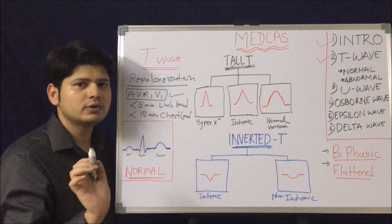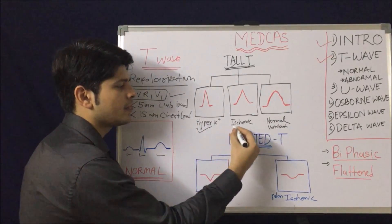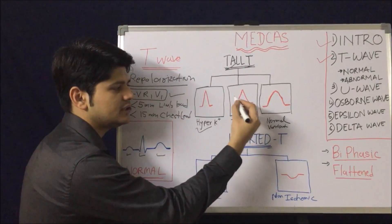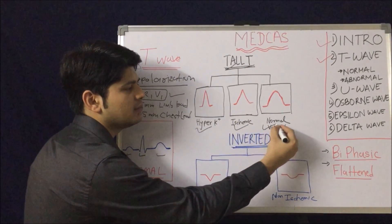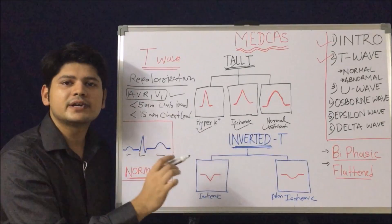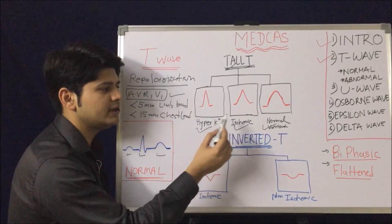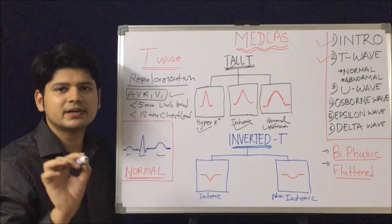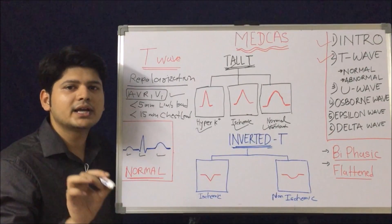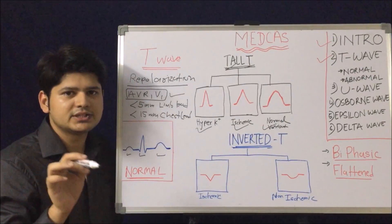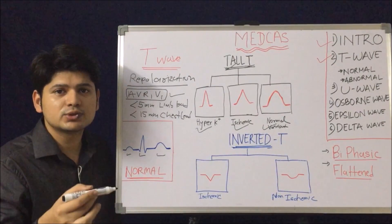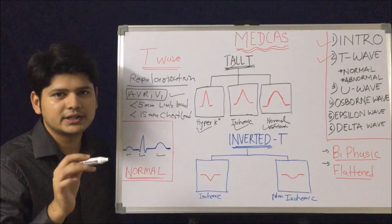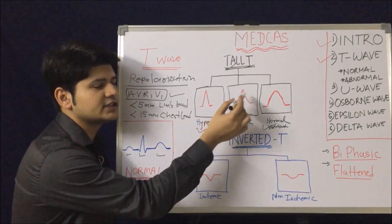Tall T wave can be seen in conditions like hyperkalemia, ischemia — mostly hyperacute MI as a first presentation with a tall T — and sometimes even as a normal variant. How to differentiate whether it's hyperkalemia, ischemia, or a normal variant? First, use common sense. A patient with risk factors for hyperkalemia is more likely to have hyperkalemic ECG changes. A patient with sudden onset chest pain is more likely to have an ischemic T wave.